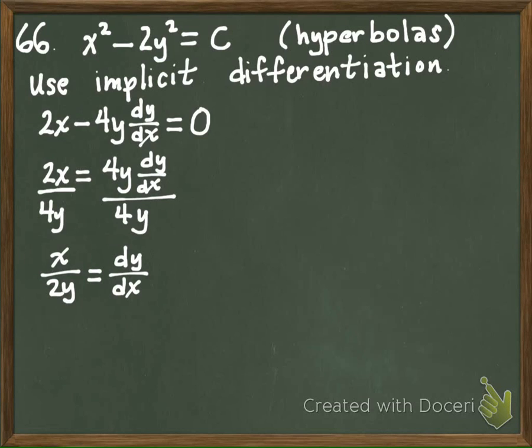Now, this one is the slope for the hyperbolas. To find the orthogonal trajectories, we need the slope for the other family of curves. So do you remember how we said we'd have to set up our differential equation? We take the negative reciprocal.